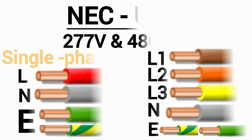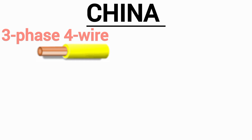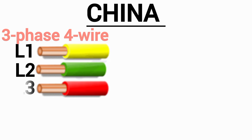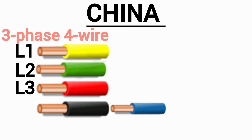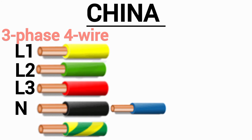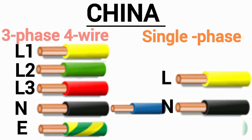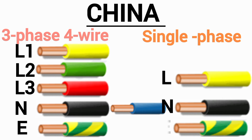The next country we move to is China. In China, yellow is used to represent L1, green is used to represent L2, red is used to represent L3, blue or black for neutral, and green with yellow stripes for earth. For single-phase in China, yellow is used for live, blue or black for neutral, and green with yellow stripes for earth.